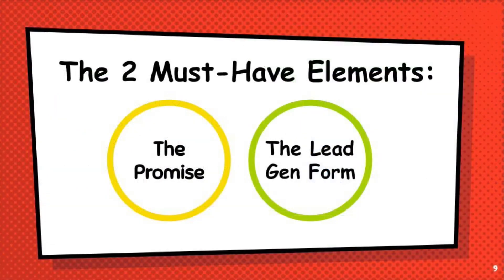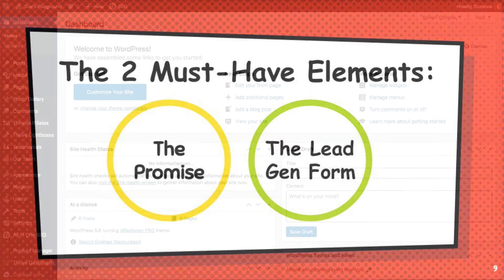The two elements you must have on your page are your promise — that's what we talked about in the previous video, and it's really the only content that you need. The other element is your lead generation form, which is the box that collects their name and email address. You don't need anything more than that for an opt-in page. Now if you're running paid advertising on Facebook or Google, you'll also need links to your legal pages down at the bottom.